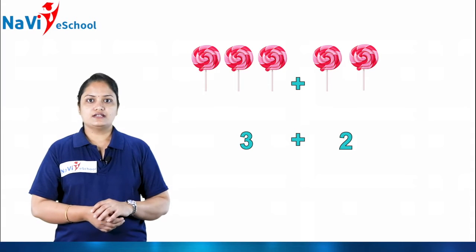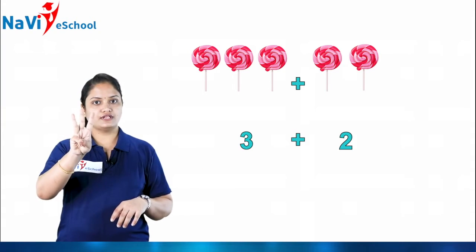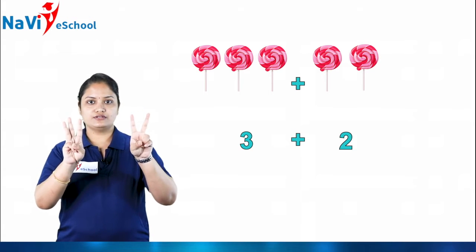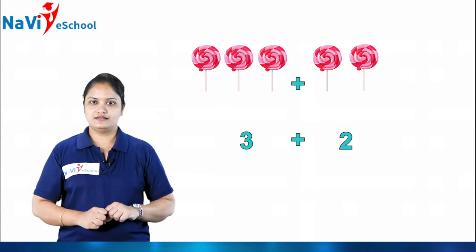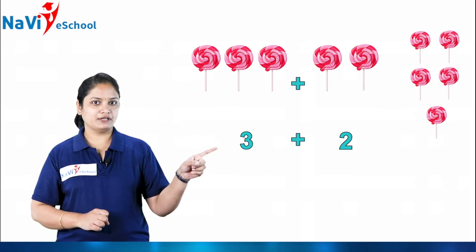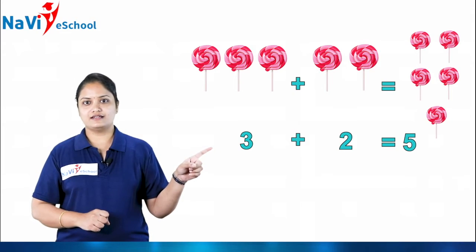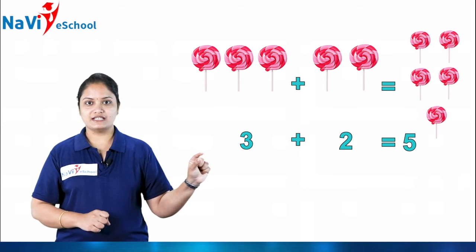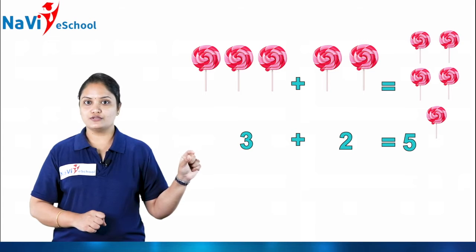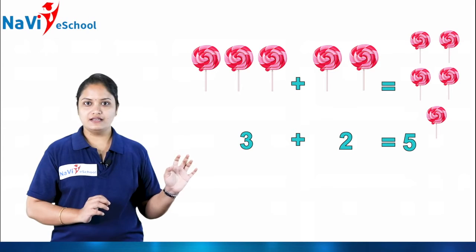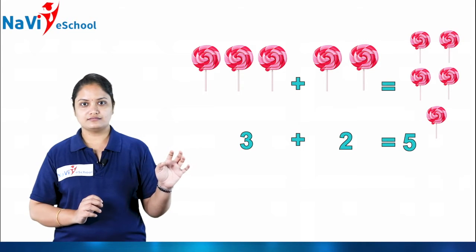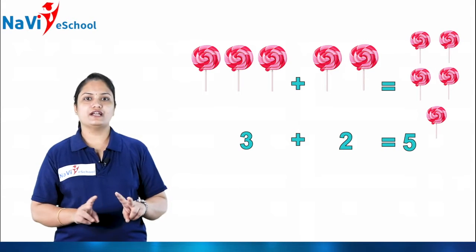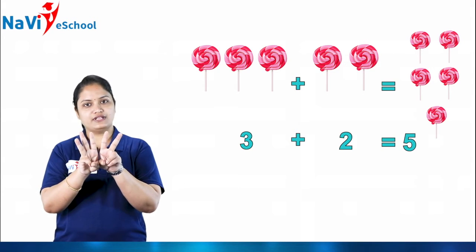So totally, how many candies? First three, next two — together how many candies do I have? One, two, three, four, five. So five candies — I'll draw them. In between you have to write the equals symbol. So how to read this: three plus two is equal to five. Now we have five candies with us.